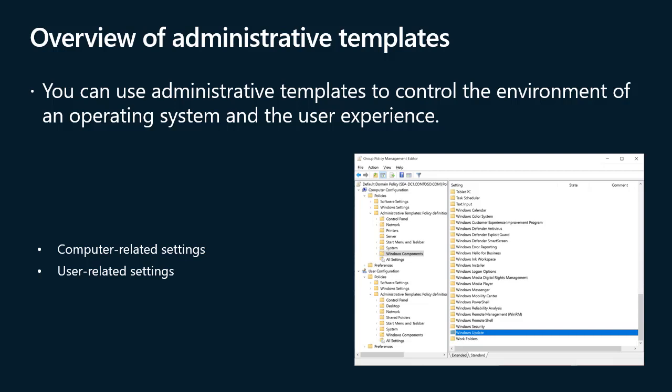Even with this organization, finding the setting you need might be challenging. All the settings in the administrative templates node of a GPO are stored in files. All currently supported operating systems store settings in ADMX files — a standards-based XML file format. By default, Windows stores ADMX files in the Windows\PolicyDefinitions folder, but you can store them in a central location. The ADMX files are language neutral; the plain-language descriptions of settings are stored in language-specific ADML files. This means administrators can review the same GPO and observe policy descriptions in their own language using their own language-specific ADML files. The PolicyDefinitions folder stores ADML files in sub-folders — for example, the en-US folder stores English files, and the es-ES folder stores Spanish files.